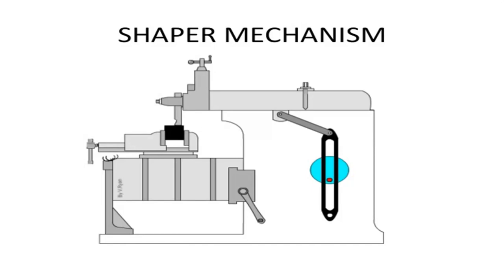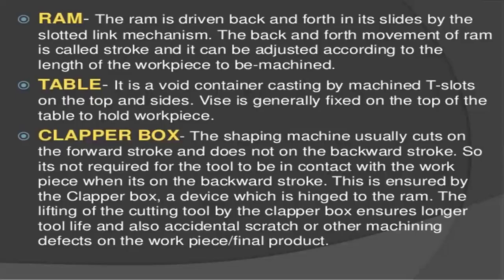The mechanism is called the quick return mechanism. By using this quick return mechanism, the rotary motion is converted into sliding motion. Using this mechanism, the cutting tool moves in forward and backward directions. The RAM is driven back and forth in its slides by the slotted link mechanism. This back and forth movement of the RAM is called the stroke, and it can be adjusted according to the length of the work.